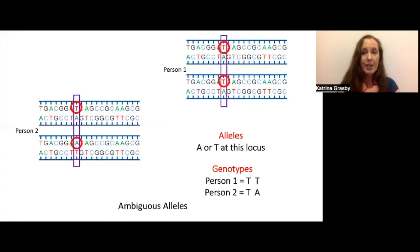However, if the alleles at a locus are the same as those that are complementary across DNA strands, then the variant is composed of ambiguous alleles. So at this particular locus, we can have either an A or a T. But the paired base of A is T, and the paired base of T is A. So the alternate allele is also the paired allele.